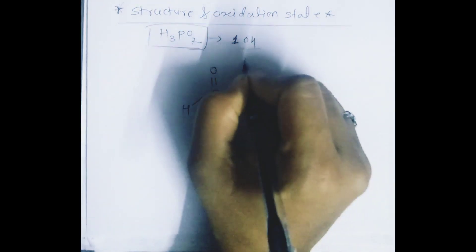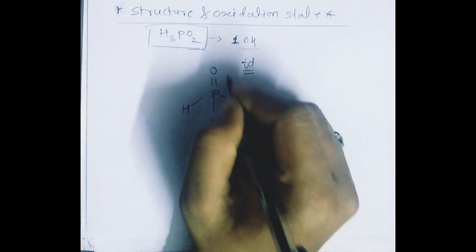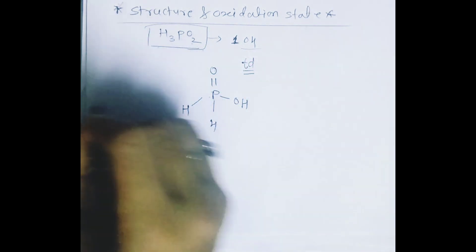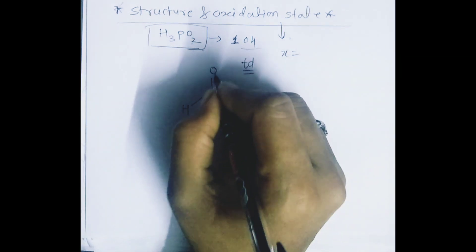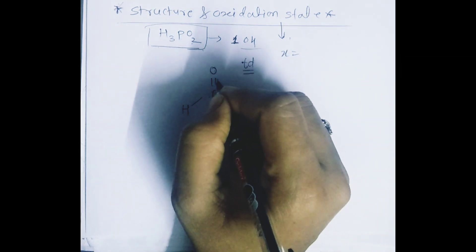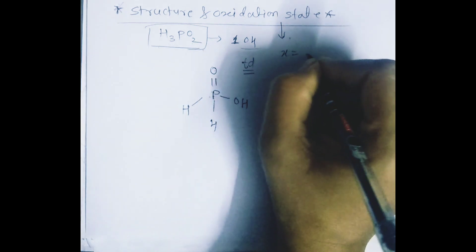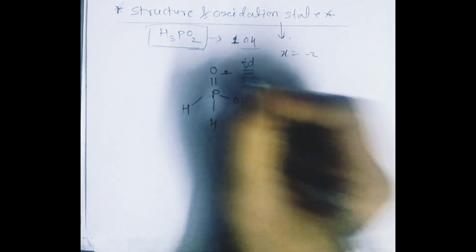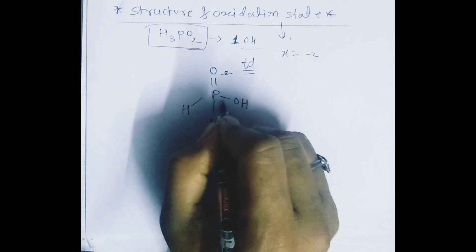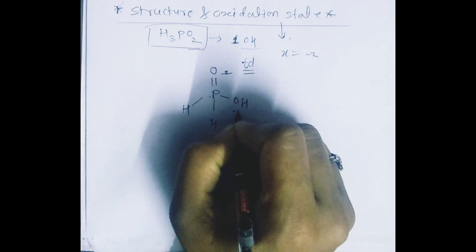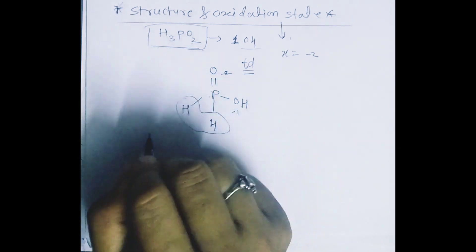This structure is like a tetrahedral structure. When we discuss the oxidation state, we consider X for phosphorus. Here, phosphorus and oxygen form a double bond, so oxygen contributes minus two. There is also one hydrogen bonding linked to the phosphorus, which contributes minus one.